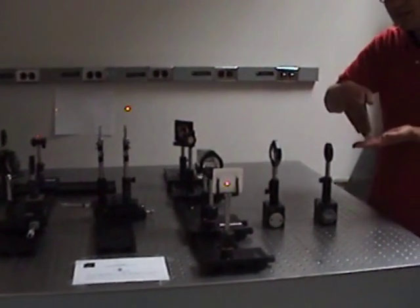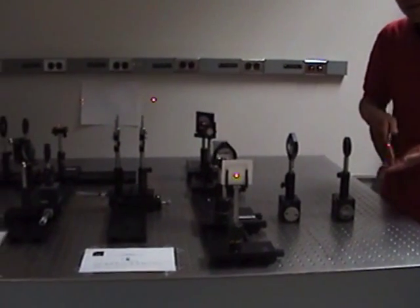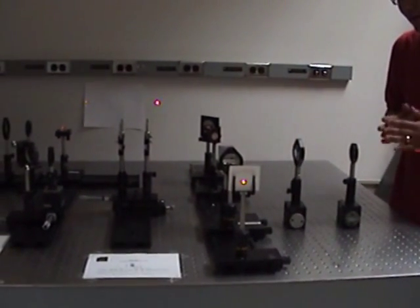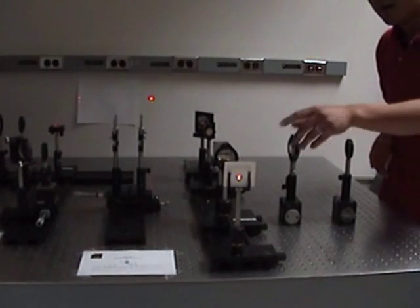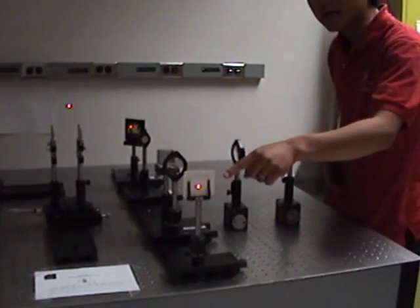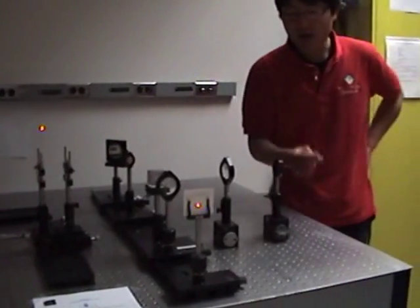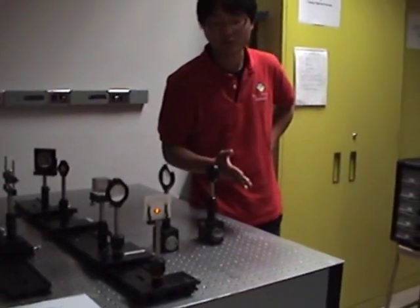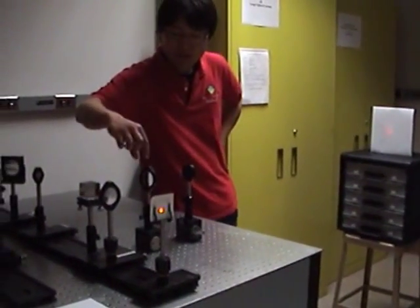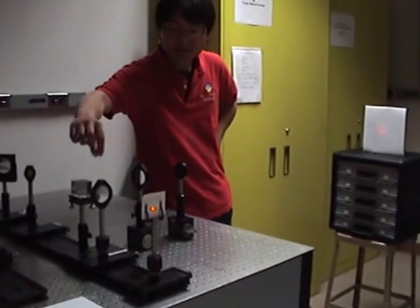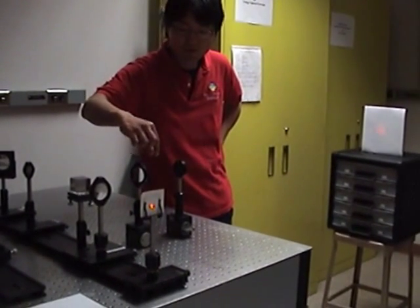And the other arm in this direction is basically the same thing as here. But instead of looking at how the point looks like, how the spot diagram looks like, we are going to look at how the fringe is going to look like. So we put again, the focusing lens. So those two beams are focused again.